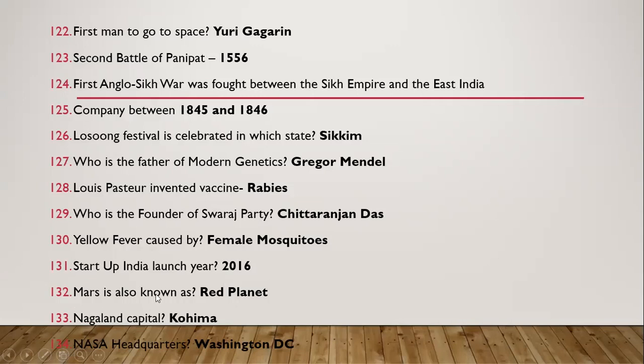Question 130: Mars is also known as the red planet. Question 131: Nagaland capital is Kohima. Question 132: NASA headquarters is in Washington DC.